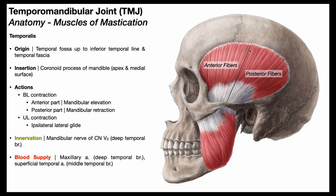We can divide the muscle belly of the temporalis into anterior fibers and posterior fibers, because they have different actions when they contract bilaterally. When the anterior fibers of temporalis contract bilaterally, we get mandibular elevation. When the left and right posterior fibers contract, we get mandibular retraction, which is sometimes called mandibular retrusion.